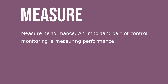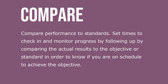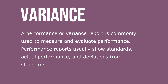Measure performance. An important part of control monitoring is measuring performance. Set times to check in and monitor progress by following up and comparing actual results to the objective or standard in order to know if you are on schedule to achieve your objective. A performance or variance report is commonly used to measure and evaluate performance. Performance reports usually show standards, actual performance, and deviations from standards.